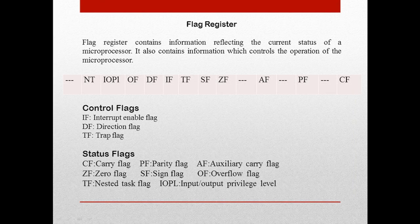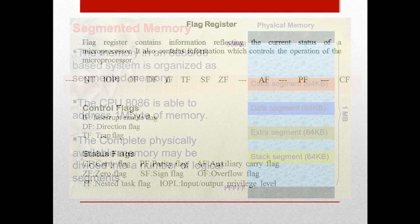The flag register contains information reflecting the current status of the microprocessor. It also contains information which controls the operation of the microprocessor. The control and status flags of the 8086 microprocessor are listed here.